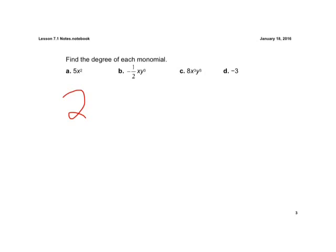If we look at part B, we have an x and a y, we need to add the exponents of both of those variables. We know if we don't see an exponent on the x, it's to the first power. So if we have 1 plus 3, our degree of this monomial is 4.